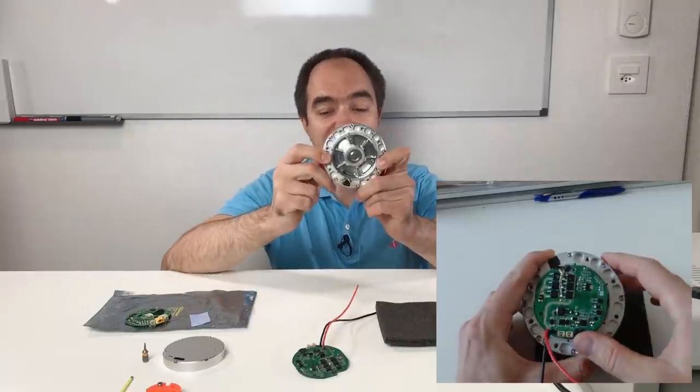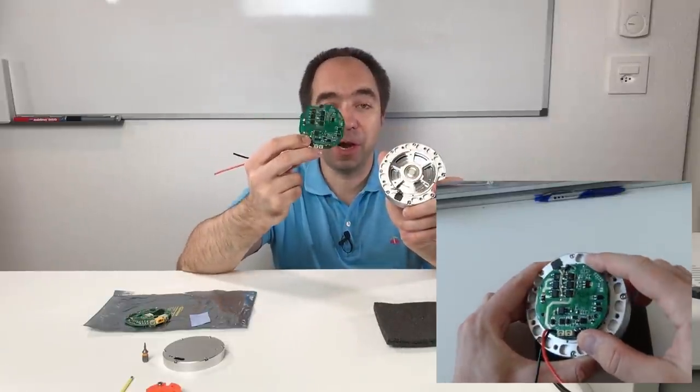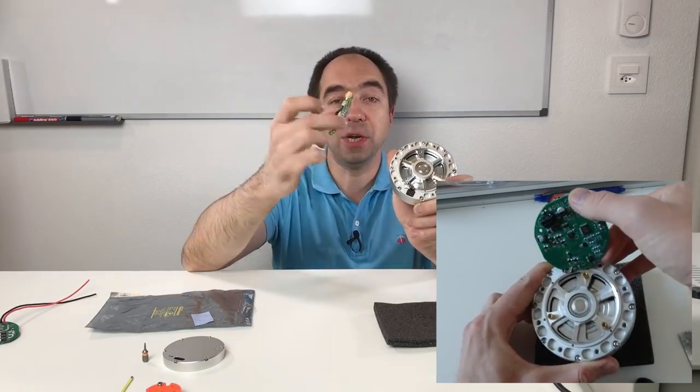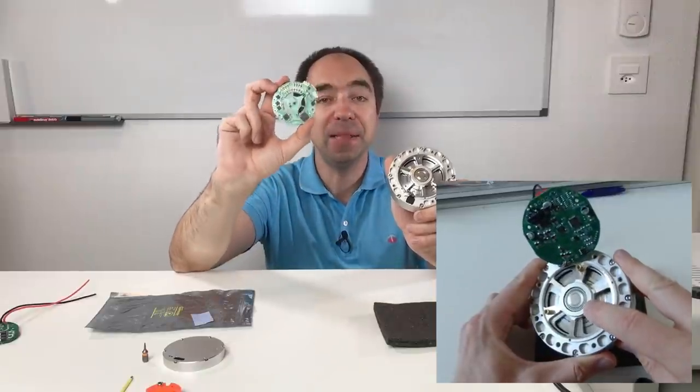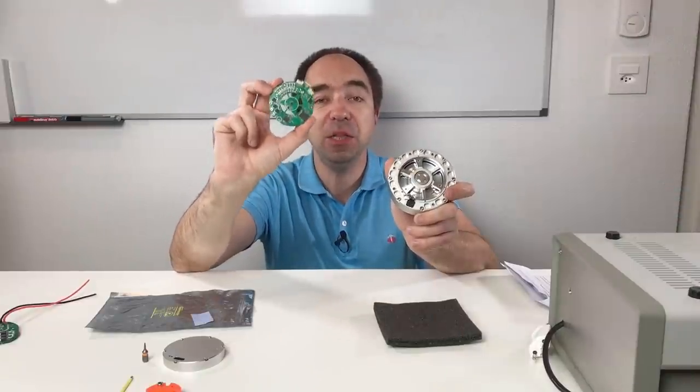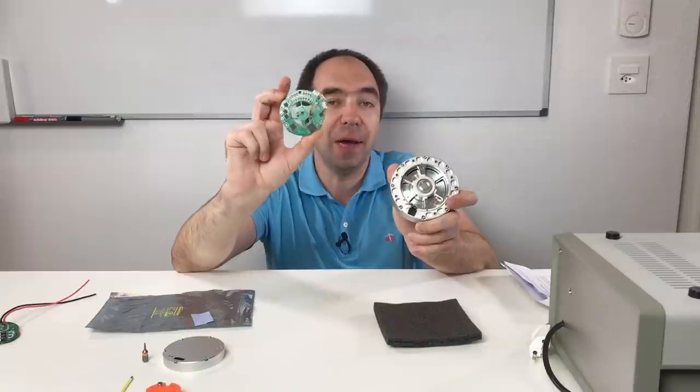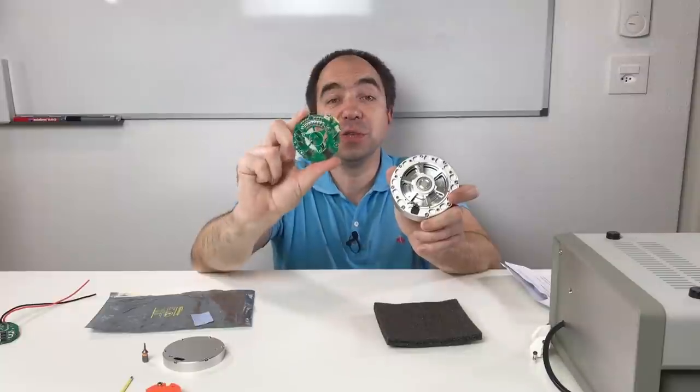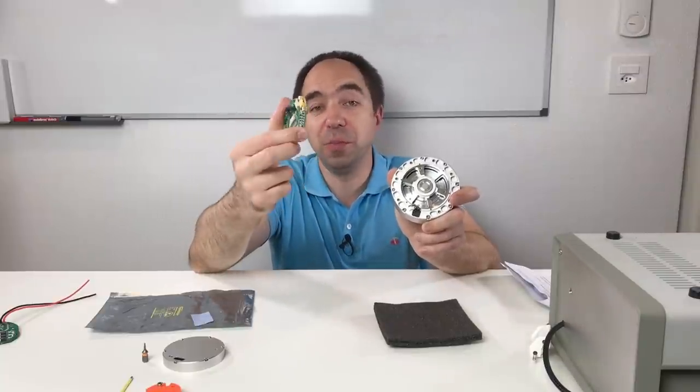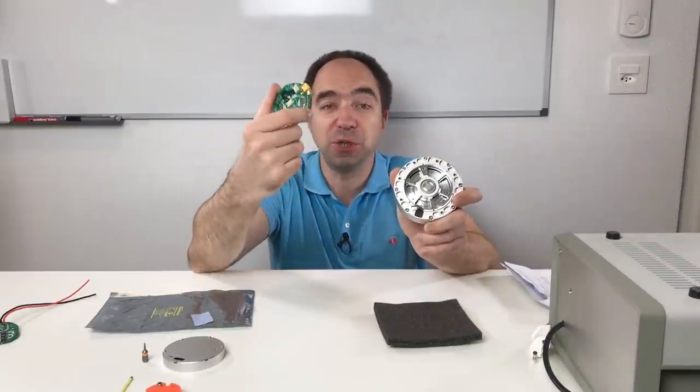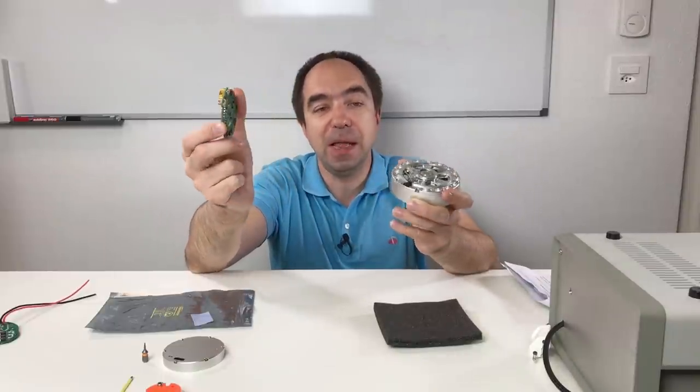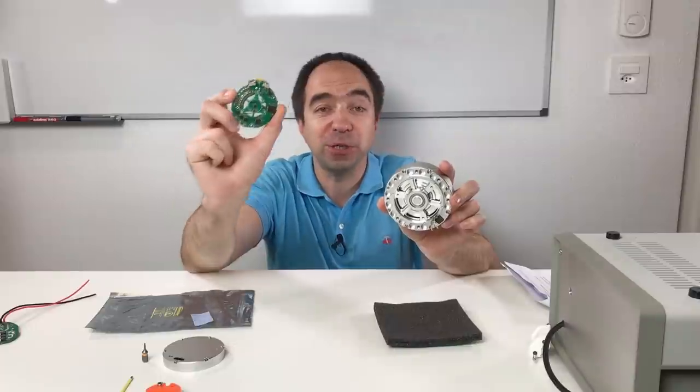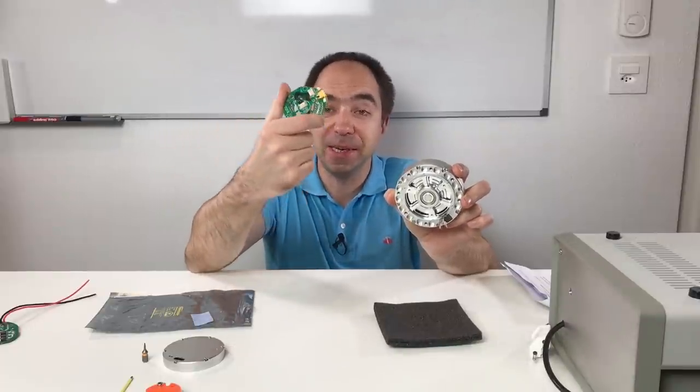And so I disassembled this actuator. I took the controller out and I would like to replace this old controller with the new controller. Because the new controller is made based on the MIT Mini Cheetah controller. So actually it's the same components but arranged in a different way. So this controller I bought also from this company SteadyWin because they use it for the newer version of the actuator. And actually I think that the newer version and the older version, the only difference is in this controller.